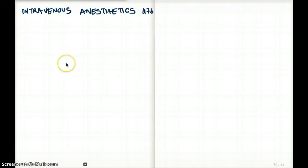In this video, I'll be talking about intravenous anesthetics. There are about five types that we have to know, and they are barbs, benzo, ketamine, opiates, and propofol.